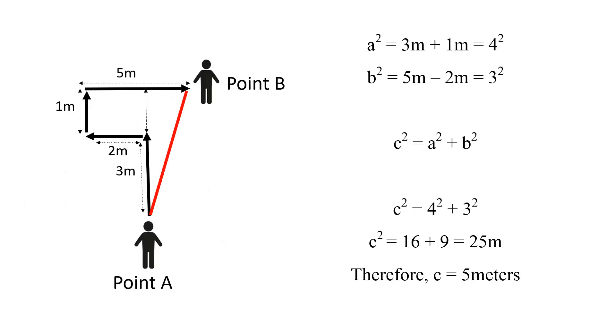Looking at our diagram, you can see a right-angled triangle right over here. So A will be equal to 3 meters plus 1 meter, which is equal to 4 meters, and B is equal to 5 meters minus 2 meters, which is equal to 3 meters.